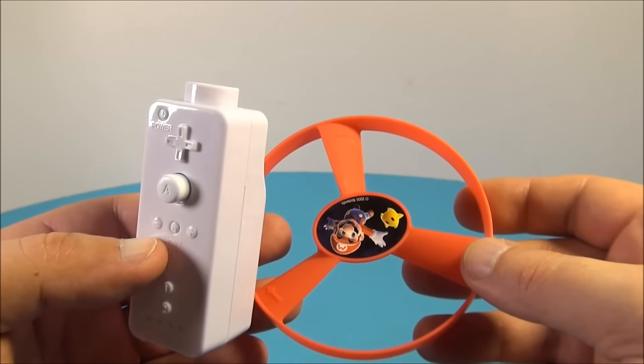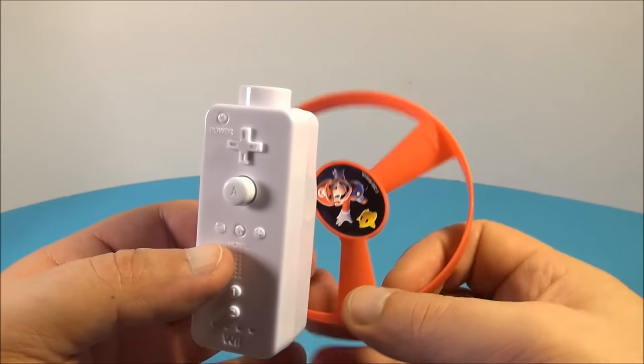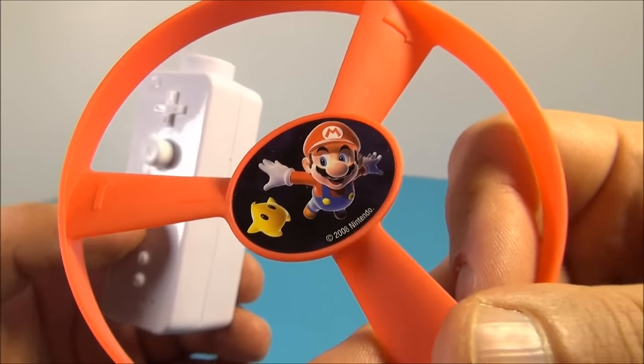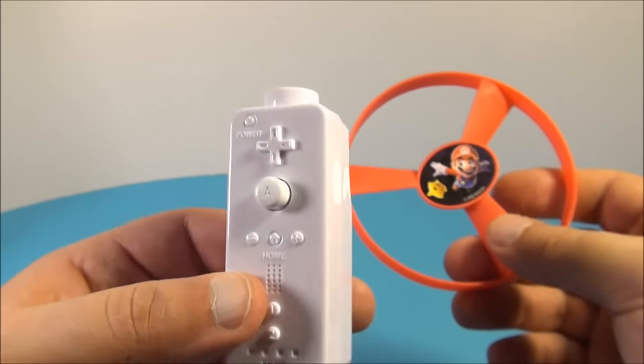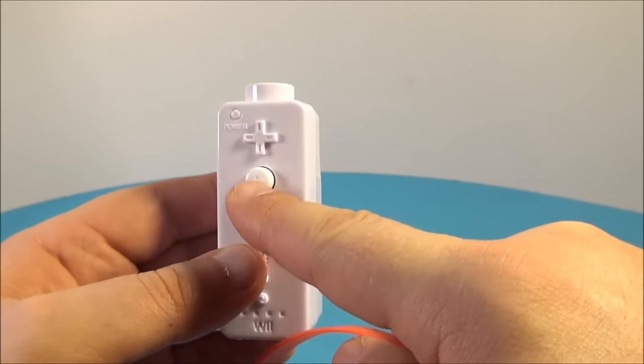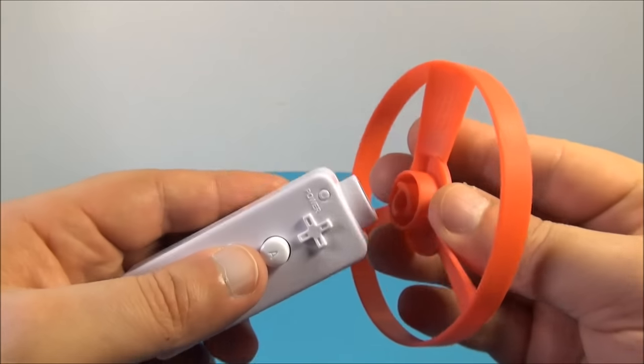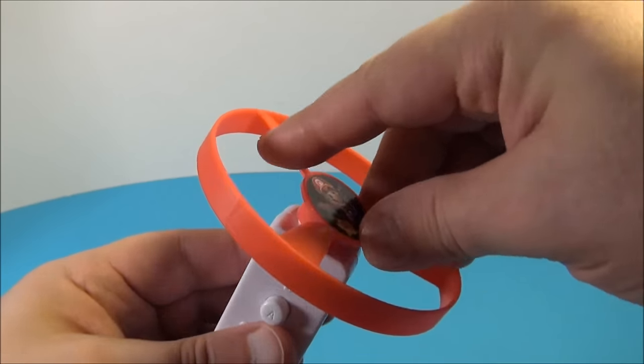Next up we have Galaxy Blast Mario. Now this is kind of cool, check that out, there's Mario there flying along. What you do is you take the controller here and you see the button right here, that's like the launching mechanism. So what you do is you put this on the top here and you wind it.